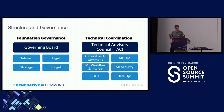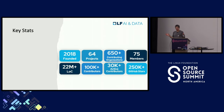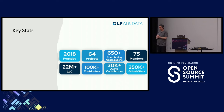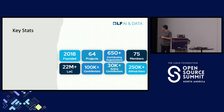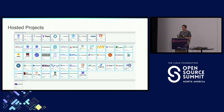A little bit more about the LF AI in data in general: we now have 64 — maybe 65, with the one announced yesterday by Intel, which just joined on Thursday — 650 organizations contributing, 75 members, and many millions of lines of code, more than 100,000 contributors across the projects across the years.